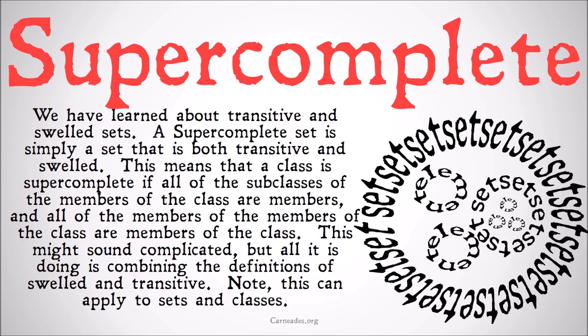Now we've learned about transitive and swelled sets. A super complete set is simply a set that is both transitive and swelled. If a set is transitive and a set is swelled then it's super complete. This means that a class is super complete if all of the subclasses of the members of the class are members of the set, and all of the members of the members of the class are also members of the class.